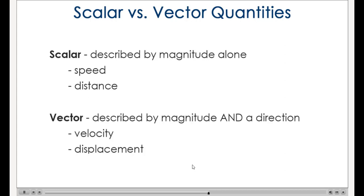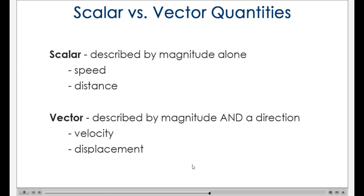But displacement is a vector quantity because it is always associated with a direction from the initial position. Displacement is described by a magnitude and a direction. For instance, 10 miles due north or 1.5 feet down.